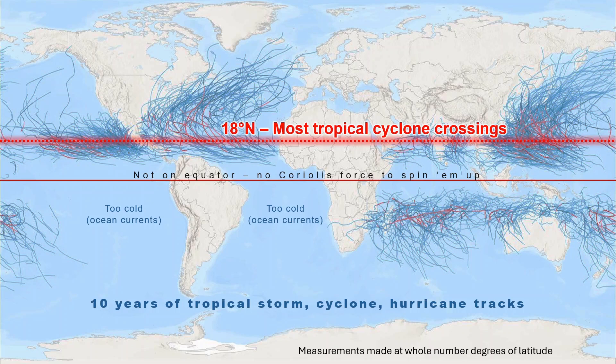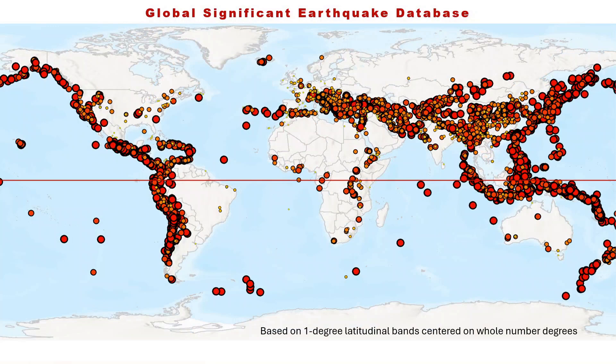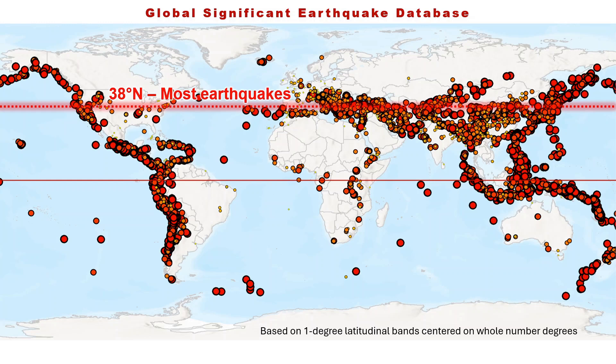Do you think earthquakes are more randomly distributed? They are more broadly distributed globally. 38 degrees north has the highest earthquake count, as that latitude follows along the long and highly active orogenic belt passing through southern Europe and Asia.